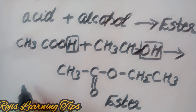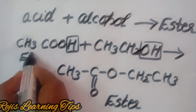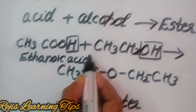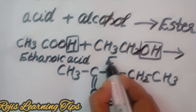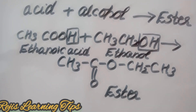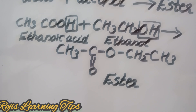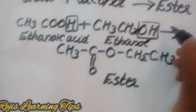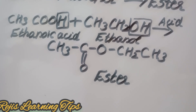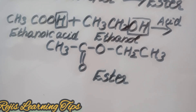Ethanoic acid, also called acetic acid, reacts with ethanol to form an ester. This reaction is known as the esterification reaction. Importantly, ethanoic acid reacts with absolute ethanol in the presence of an acid catalyst.